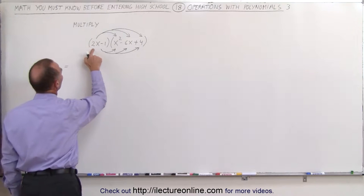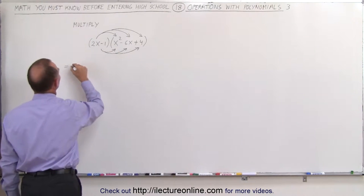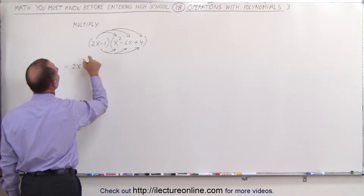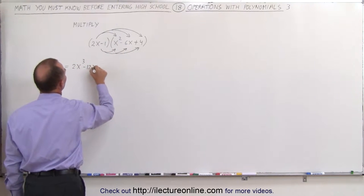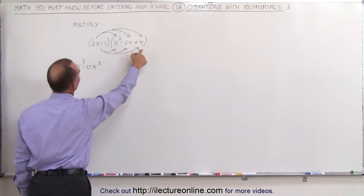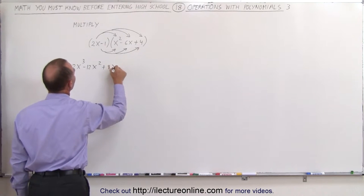This will then be equal to 2x times x squared, which gives us 2x cubed. 2x times the minus 6x is minus 12x squared. And 2x times plus 4 is plus 8x.